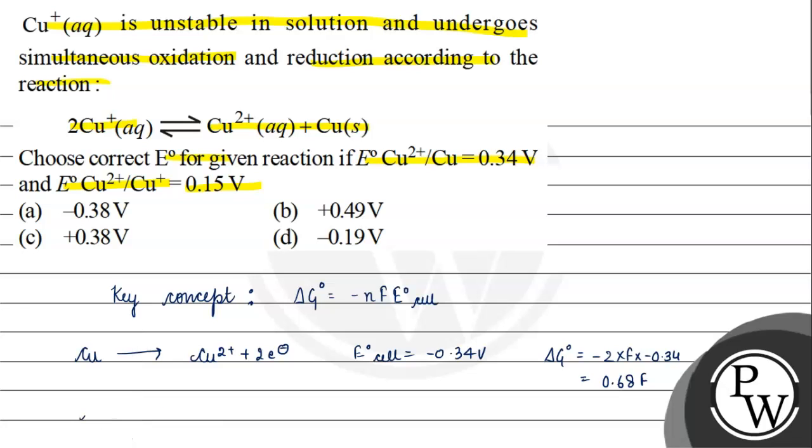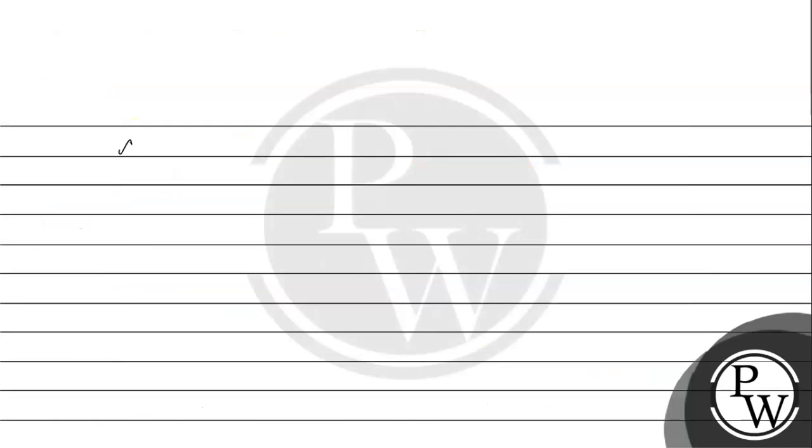Next, ΔG° for the second reaction will be -1 × F × 0.15, which gives -0.15F. Now the second equation is Cu²⁺ to Cu⁺ plus electron.